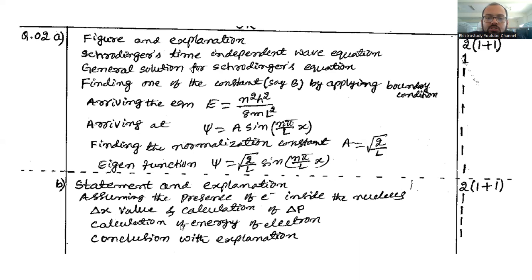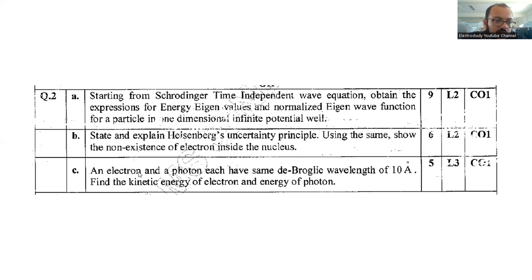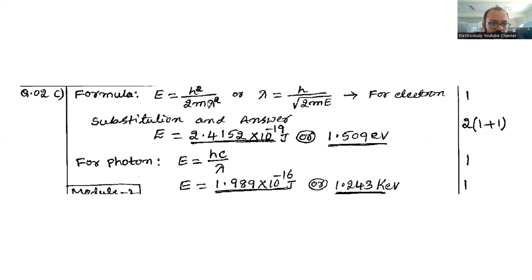Question number 2c: Electron and photon each having the same de Broglie wavelength of 10 angstrom, find the kinetic energy. This is a problematic question so you have to use the formula, definitely this is the main core formula. Using this you can easily get the value.